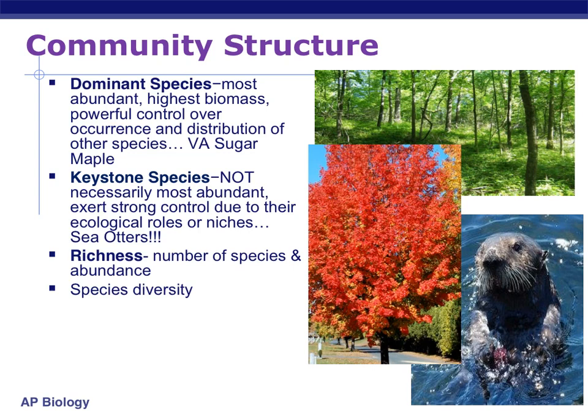We also think of the richness of the community — not how wealthy the animals are, but the number of species and their abundance. A community that only has 10 species and isn't very widespread wouldn't be very rich, versus one that has 18, 20, or 36 different species with lots of individual organisms in each species. That community would be more rich. Then of course we have to think of species diversity: do we have lots of different kinds of animals, plants, or bacteria living in the same area?